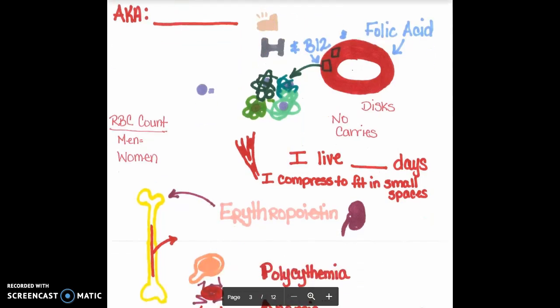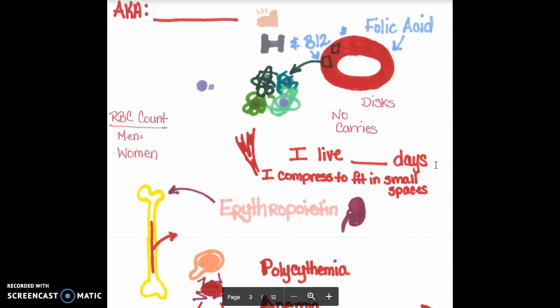Red blood cells also live for about 120 days on average. After that, what we do is we recycle the iron in that hemoglobin to create new red blood cells. And the rest will be eliminated through primarily the digestive tract. That is a conversation for next semester.